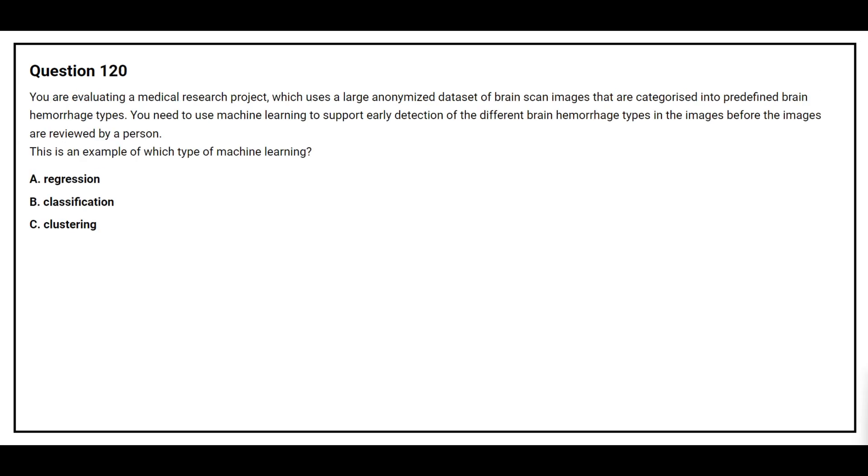Question number 120. You are evaluating a medical research project which uses a large anonymized data set of brain scan images that are categorized into predefined brain hemorrhage types. You need to use machine learning to support early detection of the different brain hemorrhage types in the images before the images are reviewed by a person. This is an example of which type of machine learning? Option A, regression. Option B, classification. Option C, clustering. The correct answer is option B, classification.